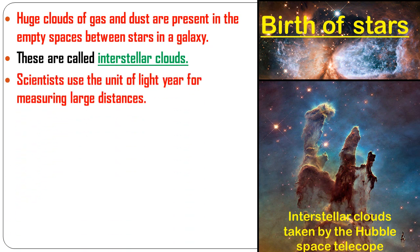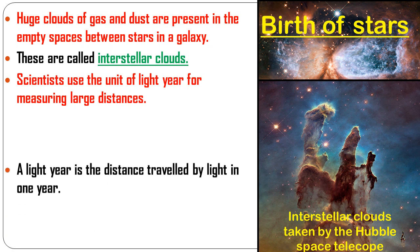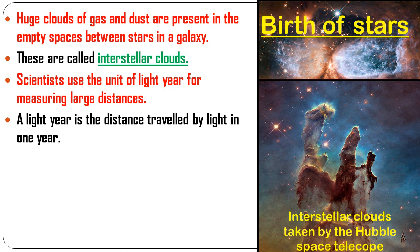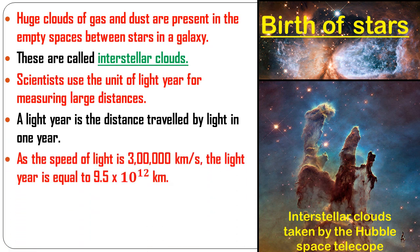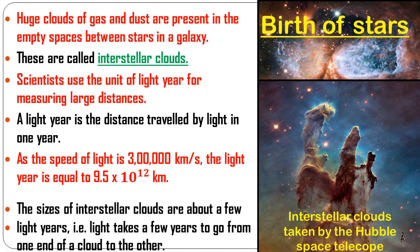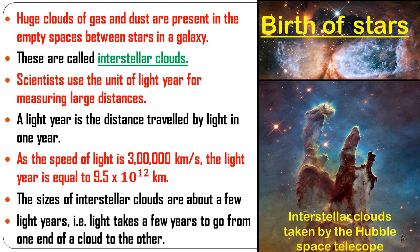Scientists use the unit of a light year for measuring large distances between galaxies. A light year is the distance traveled by light in one year. Since the speed of light is 3 lakh kilometers per second, one light year equals 9.5 × 10¹² kilometers. The sizes of interstellar clouds are about a few light years — meaning light takes a few years to travel from one end of a cloud to the other.